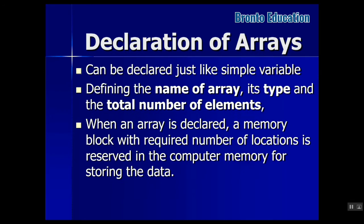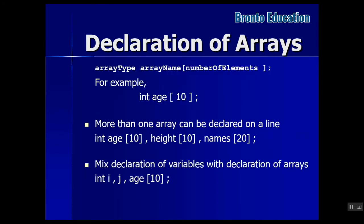Arrays can be declared just like simple variables by defining the name of the array, its type, and the total number of elements you want to save. When an array is declared, a memory block with the required number of locations is reserved in the computer memory. First you write the array type, then the array name, then inside brackets you mention the number of elements to store.